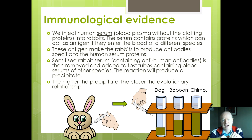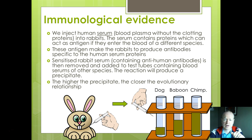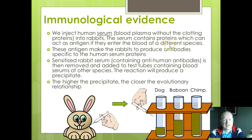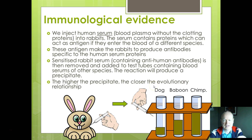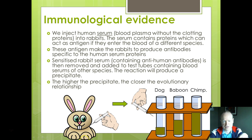Immunological evidence: in immunology we look at reactions between one thing and another. Think about your immune system — white blood cells make antibodies to fight off diseases, reacting to antigens on the surface of pathogens. If we mix part of human blood serum — which contains antigens — into rabbits, the rabbits make anti-human antibodies. You can then use this rabbit serum and compare it to other blood. The more similar an organism is to humans, the more precipitate is produced — for example, humans and chimpanzees have lots of precipitate because they have very similar blood.